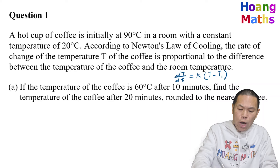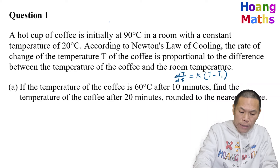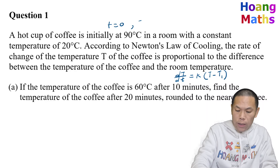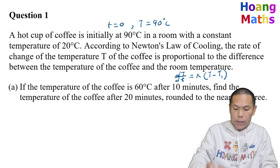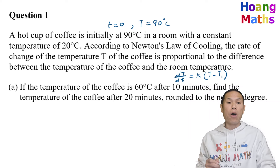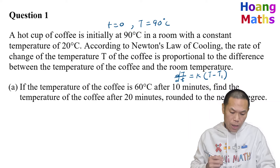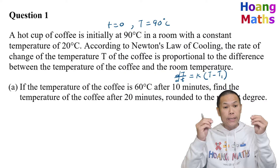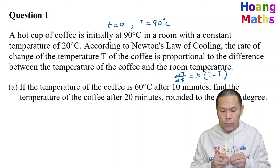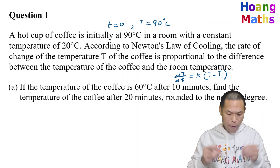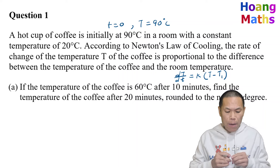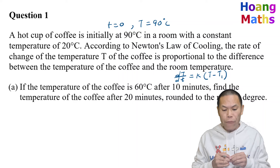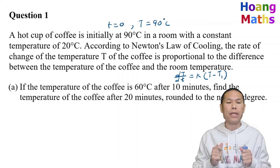So that is dT/dt equals k times (T minus T_room). Keep that in mind. We know that when t equals zero, T is 90 degrees Celsius. The question is: if the temperature of the coffee is 60 degrees Celsius after 10 minutes, find the temperature of the coffee after 20 minutes.